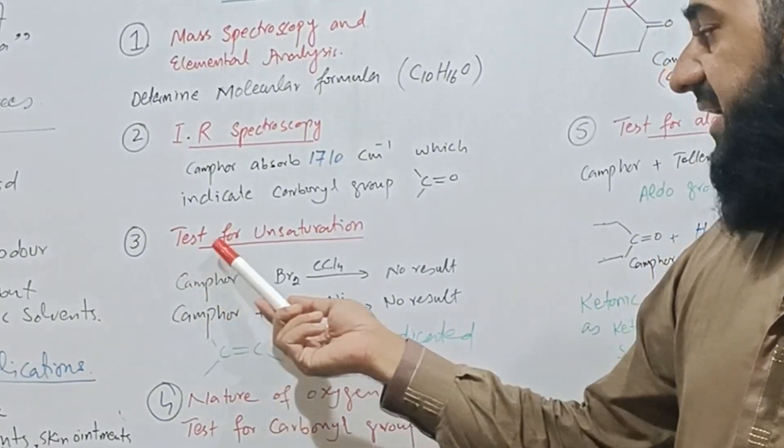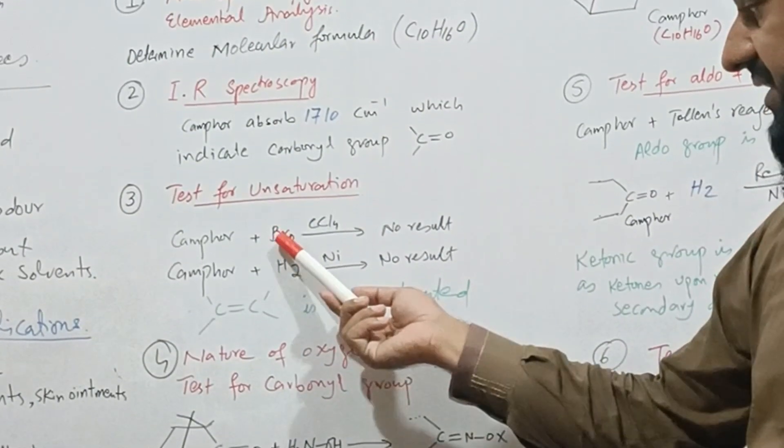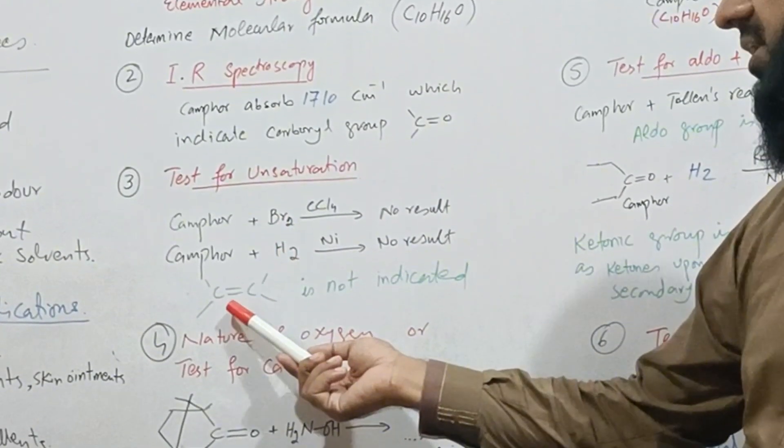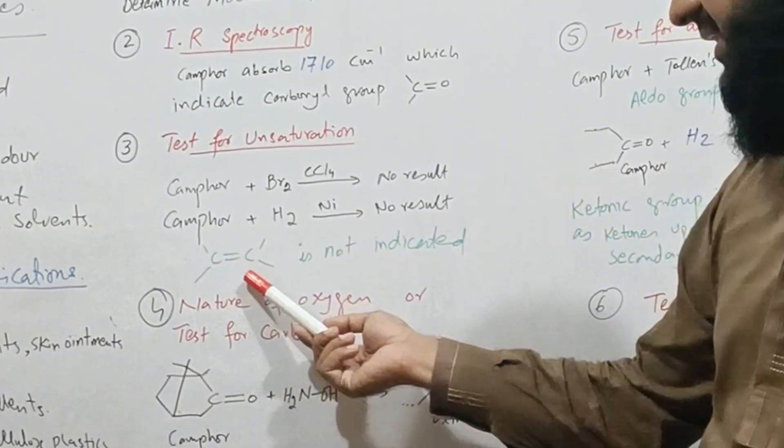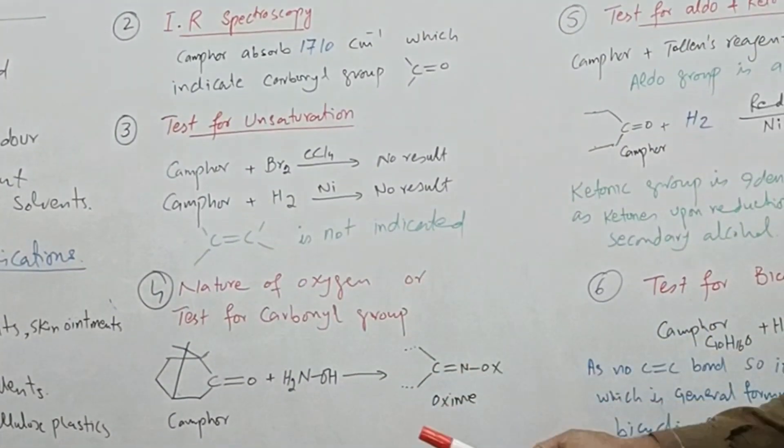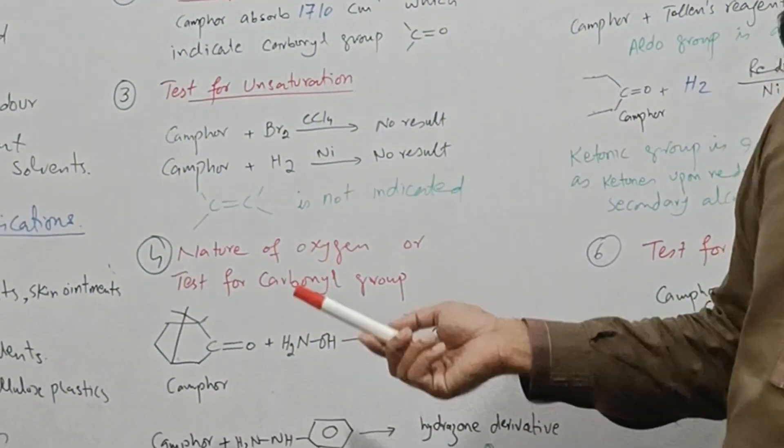When we perform test for unsaturation, camphor does not add bromine or hydrogen, which indicates that there is no carbon-carbon double bond or pi bond present between carbon atoms. What kind of oxygen is present as indicated through the infrared spectroscopy?